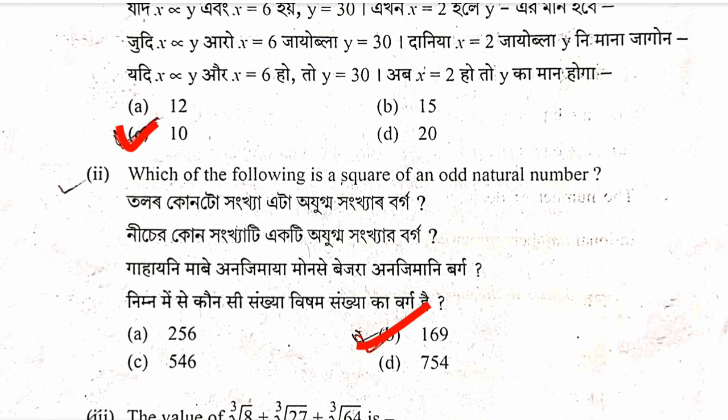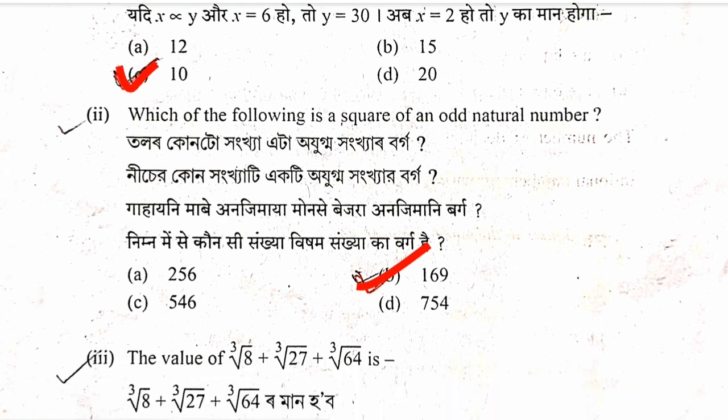Second question: Which one of the following is a square of an odd natural number? Option A is 256, which is an even number. Option B is 169, which is 13 squared. Therefore 169 is a square of an odd natural number.